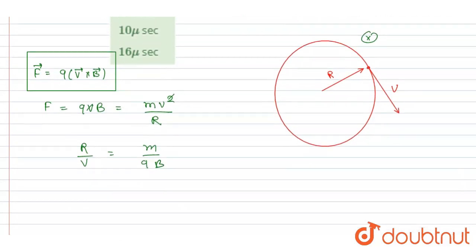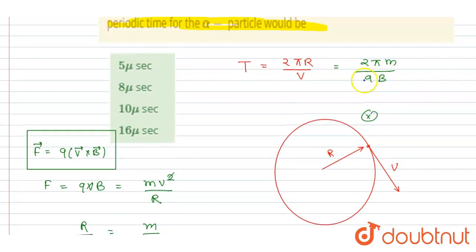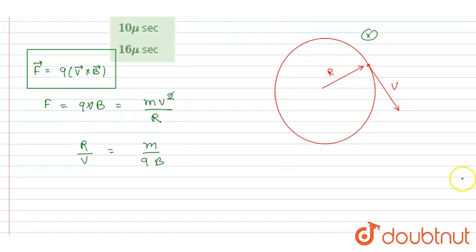So you can see the time period is directly proportional to mass and inversely proportional to the charge. So if I write down, we wanted the time period for the alpha particle and the time period of the proton particle.